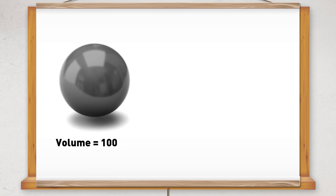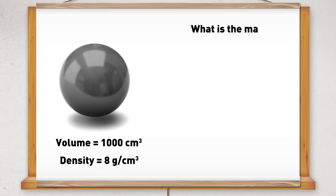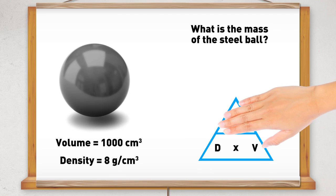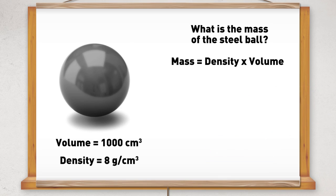Here's a second example. A steel ball has a volume of 1,000 centimetres cubed and a density of 8 grams per centimetre cubed, and we need to find its mass. Using the formula triangle, we cover up the mass, and that gives us the calculation density multiplied by volume. Since the compound measure of density is one of the quantities given, we need to make sure that its units — grams per centimetre cubed — match up with the units for volume. Since this is centimetre cubed, they match up, so we don't need to convert the units and can put the numbers straight into the formula.